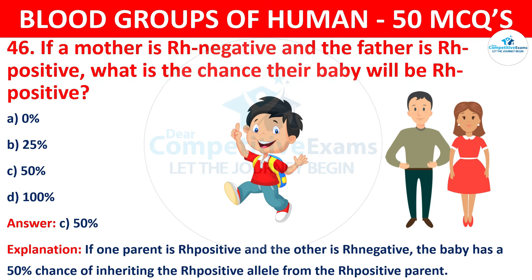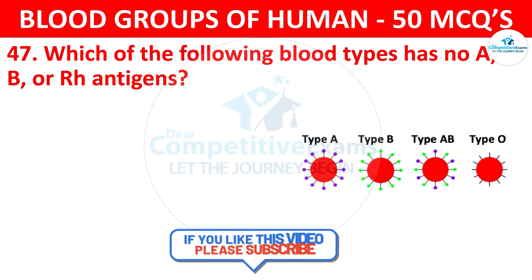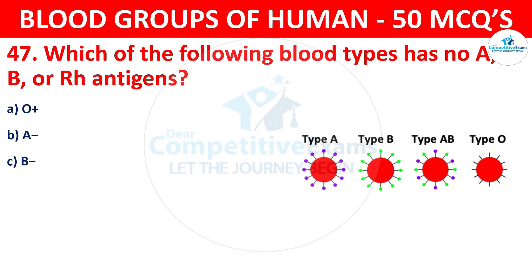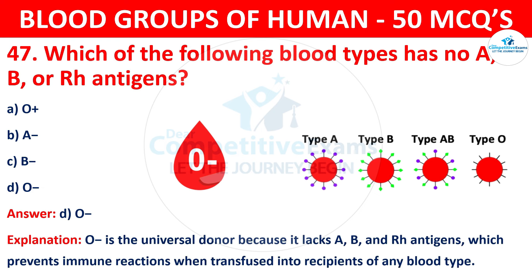Question 47: Which of the following blood types has no A, B, or RH antigens? The correct answer is D, O negative. O negative is the universal donor because it lacks A, B, and RH antigens, which prevents immune reactions when transfused into recipients of any blood type.